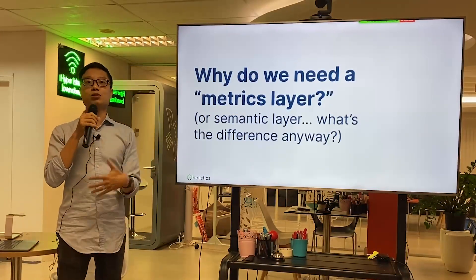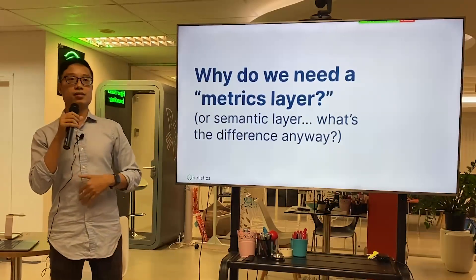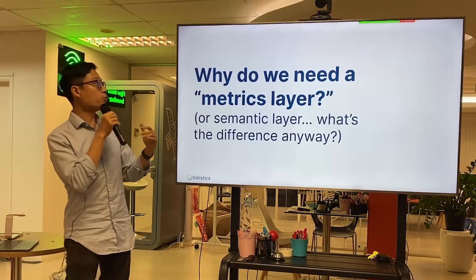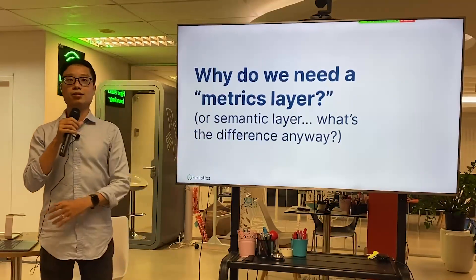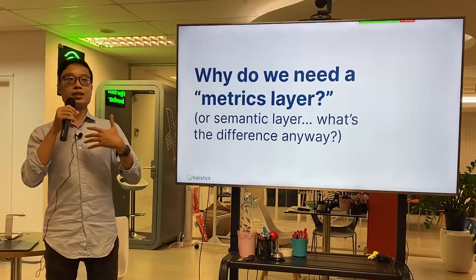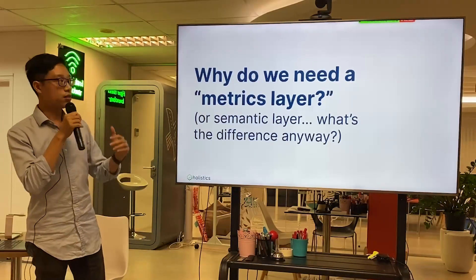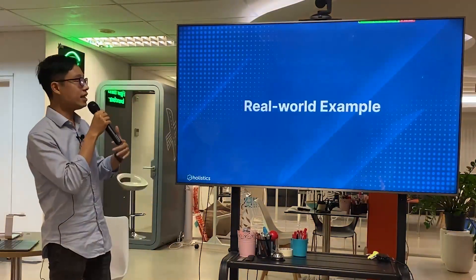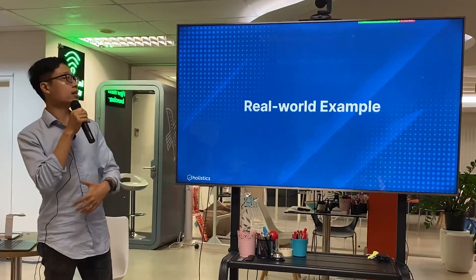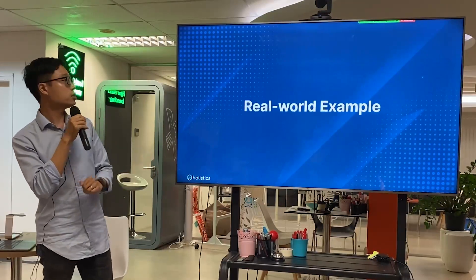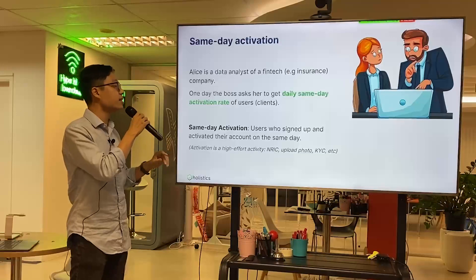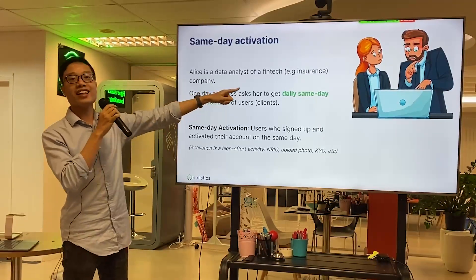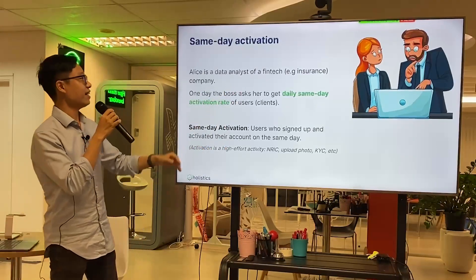So what is all this hype about semantic layers, or metric layers? What's the difference, and what exactly is it anyway? Let's go through a real example to understand why we need a semantic layer. We have a fintech scenario — the boss is named Bob, and the analyst is named Alice.